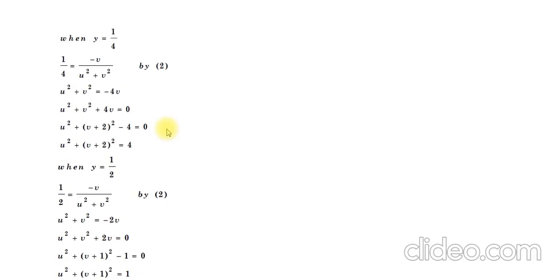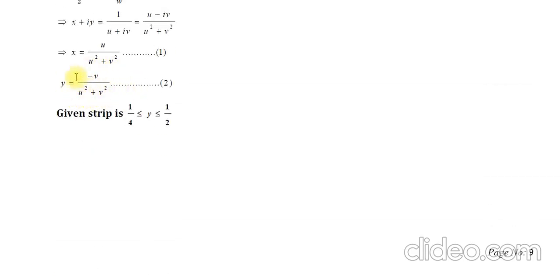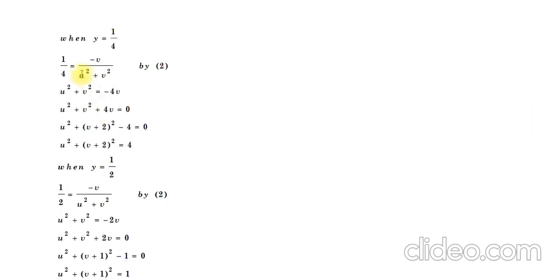So for y = 1/4, what happens? y means -v/(u² + v²), this is what we got here. So u² + v² cross multiplying equals -4v, so u² + v² + 4v = 0. Remember what does this represent? If the variables u and v both have degree 2, so it is a circle.